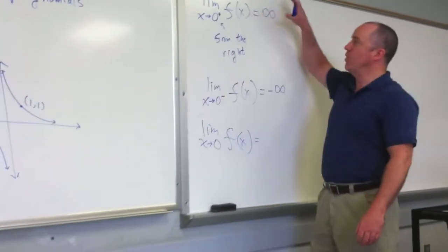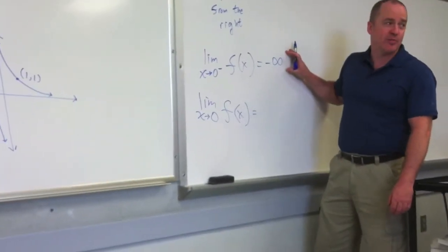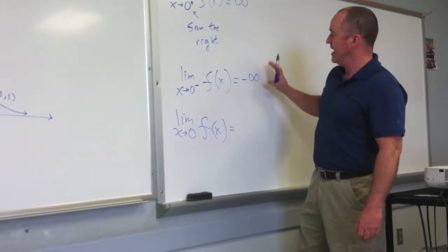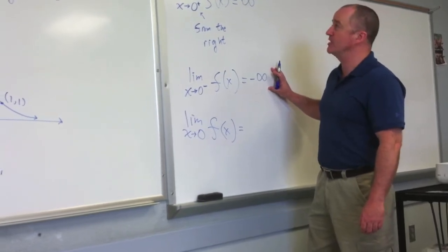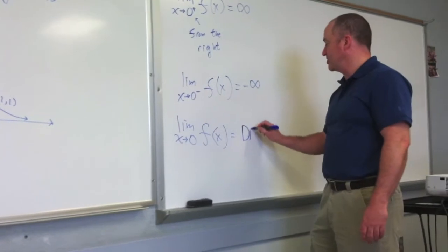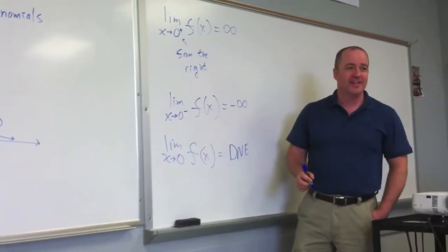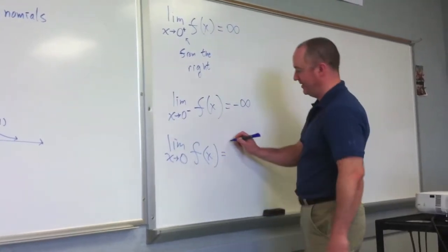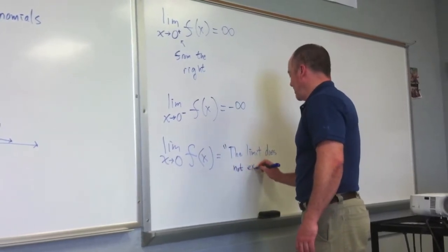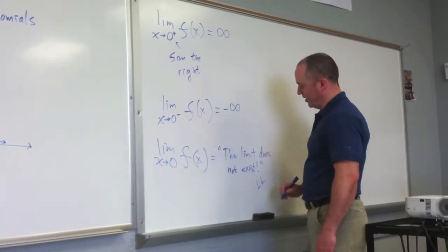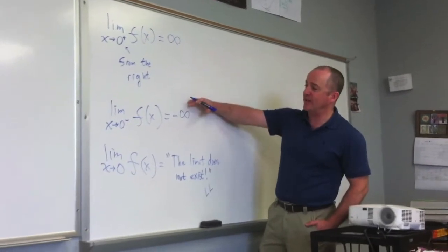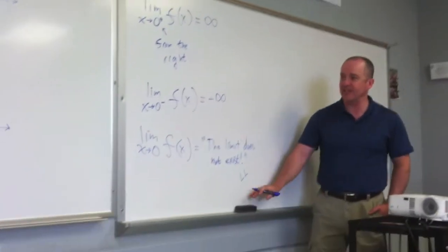If you have a limit that has one value when you approach from the right and another value when you approach from the left, when you talk about the actual limit, if a limit equals one thing from the right and another thing from the left, now is the time when it is appropriate to quote that mathematical genius Lindsay Lohan and say, 'The limit does not exist!' So this is where it's appropriate to write does not exist, because if the limit is one thing from the right and something else from the left, the actual limit will not exist. It's said to not exist.